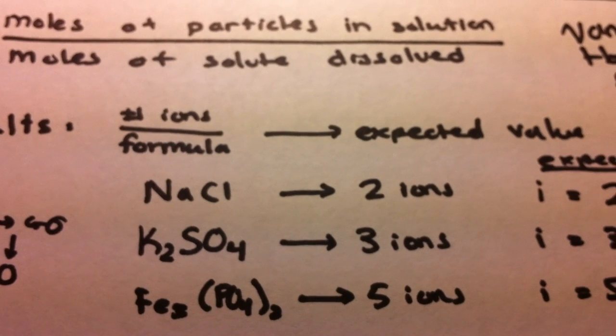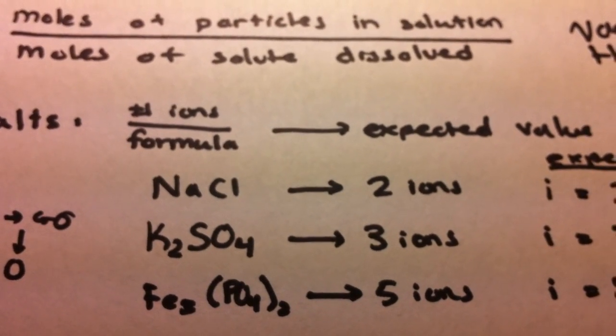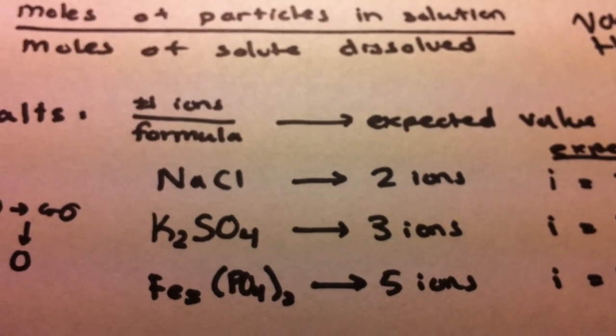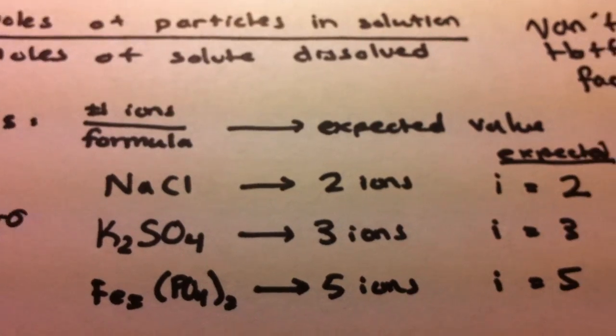For iron 2 phosphate, we're going to have five ions after dissociation because of the three iron ions and the two phosphate ions. So our i value will be 5.